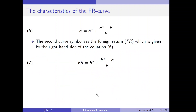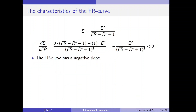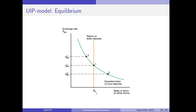Deriving the slope of the FR curve is a little bit more complex. The green curve in this diagram symbolizes the foreign return, given by the right-hand side of equation 6. FR is equal to R* plus the expected change in the exchange rate. In order to compute the slope of this curve, it is very important that we solve equation 7 for the exchange rate E, and then it's easy to differentiate — because the slope in this diagram is the ratio DE/DFR.